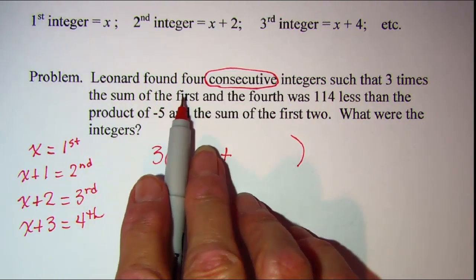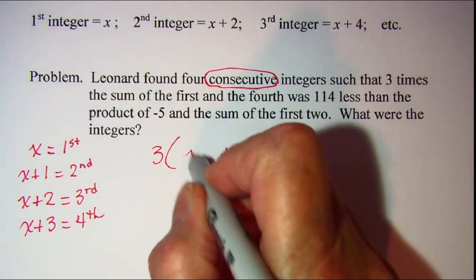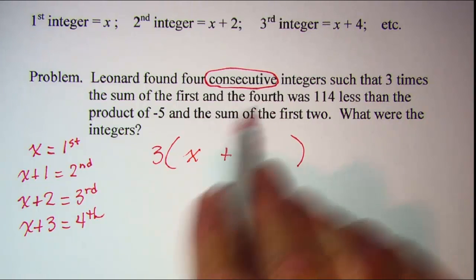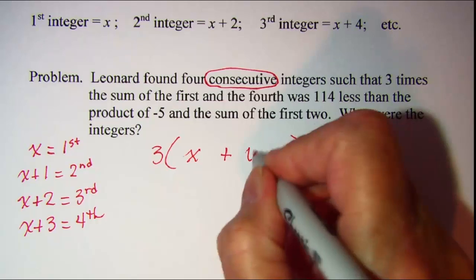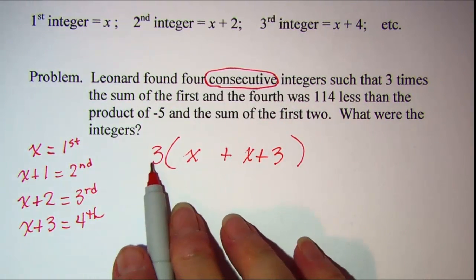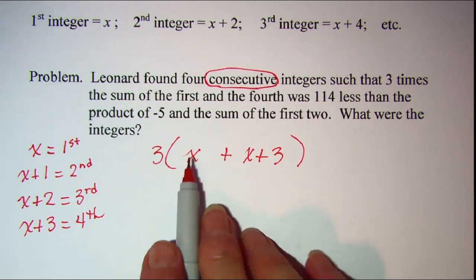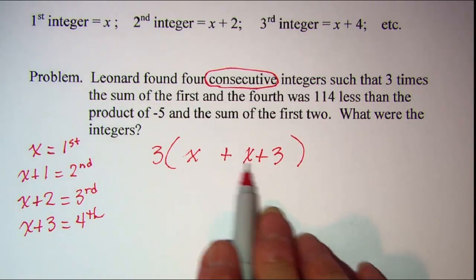I'm adding the first which is x and the fourth which is x plus 3. So this so far we have three times the sum of the first and the fourth.